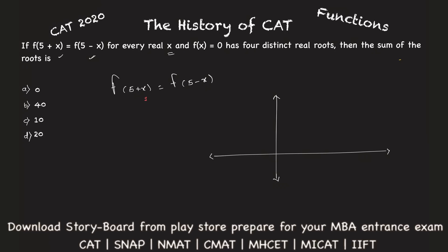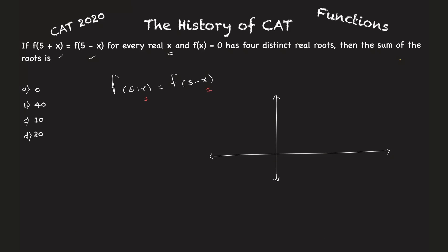If x equals one, then what will this become? f(5+1), this will be f(6), and this will be 5-1, f(4). So f(6) equals f(4), which means what? If I take this to be as five, one ahead of this, f(6) will be equal to f(4), which means this two can have same value. Function at this and this point have same value.